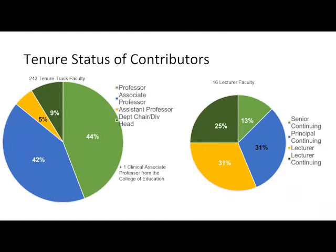The highest percentages are with our principal continuing lecturers, who have a continuing appointment — similar to having gotten past tenure status. 31% of our lecturers do not have a continuing appointment at the time, which would be interesting to explore further — whether they're looking to move into a tenure line position or produce more scholarship to get a continuing appointment, and how the institutional repository can help them with that goal.